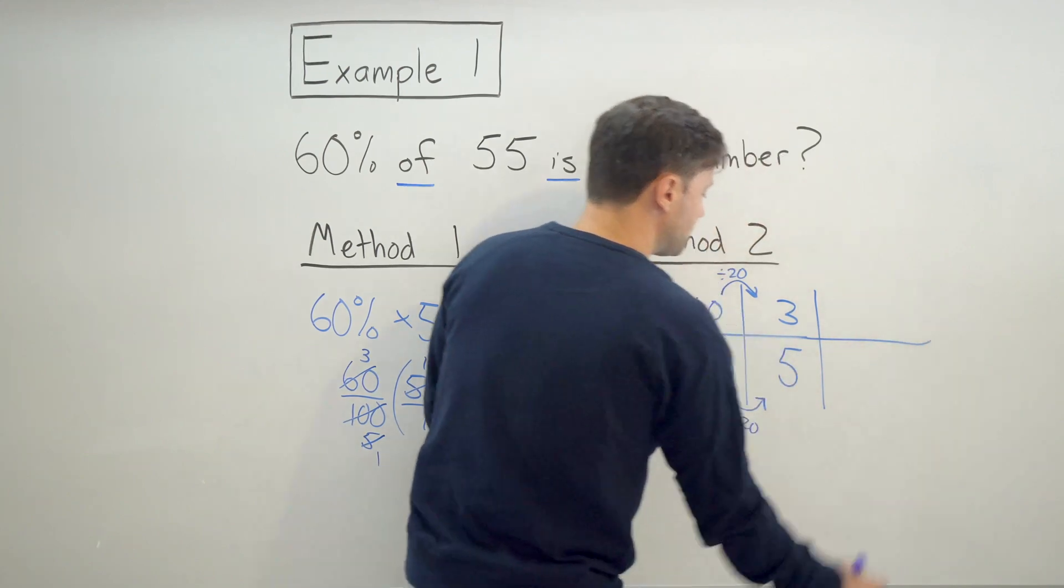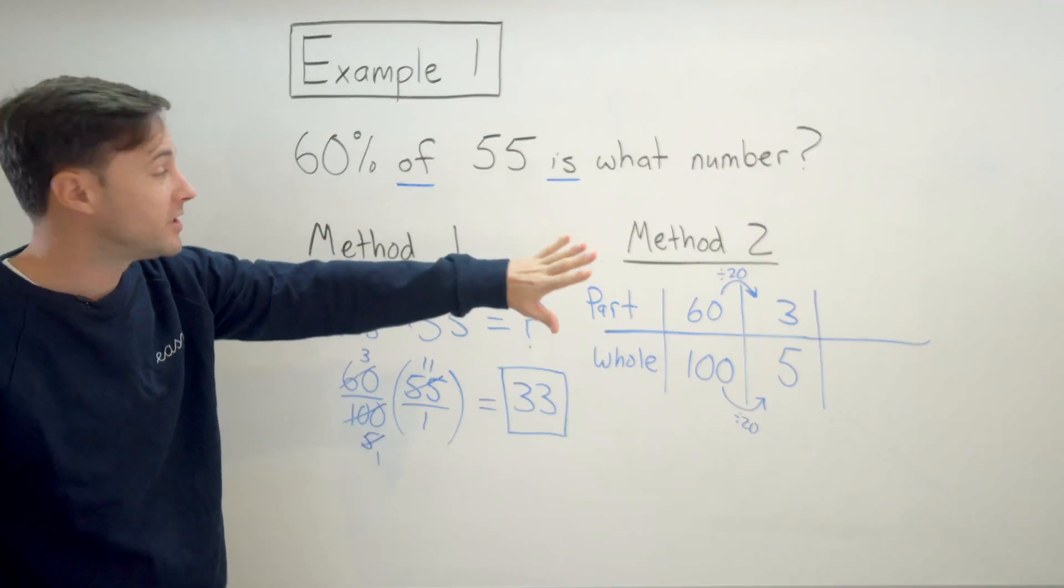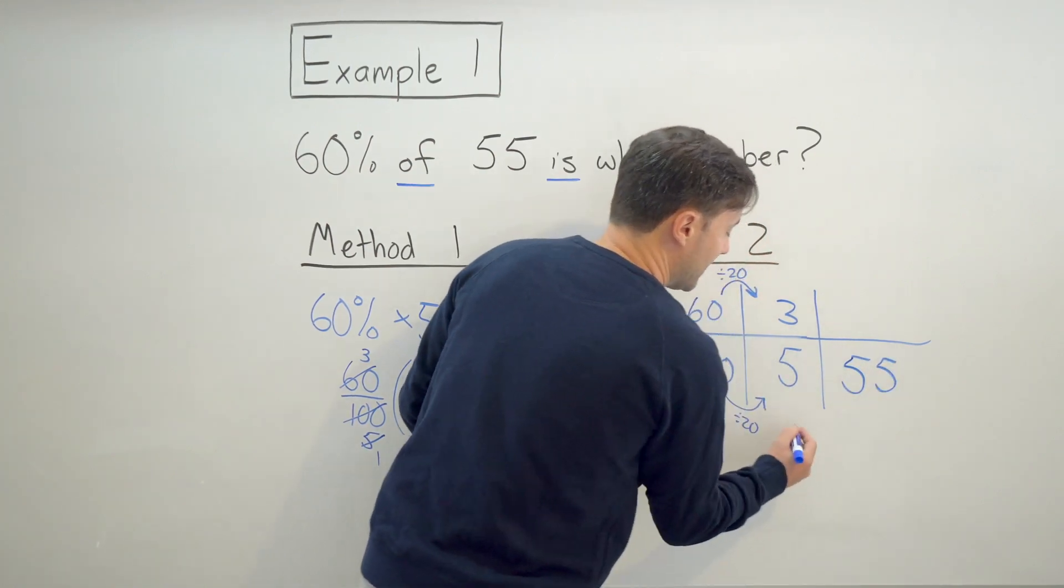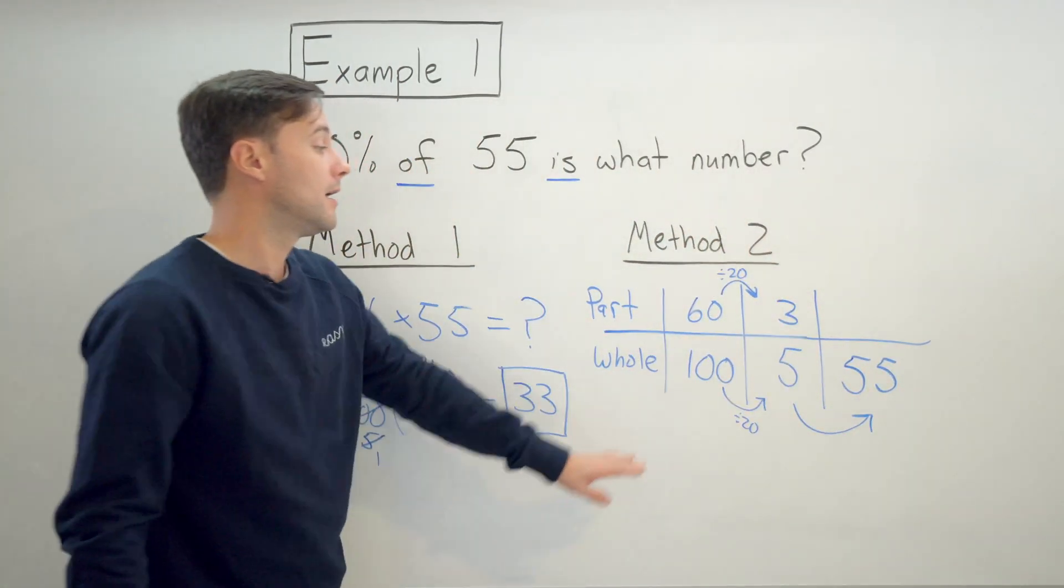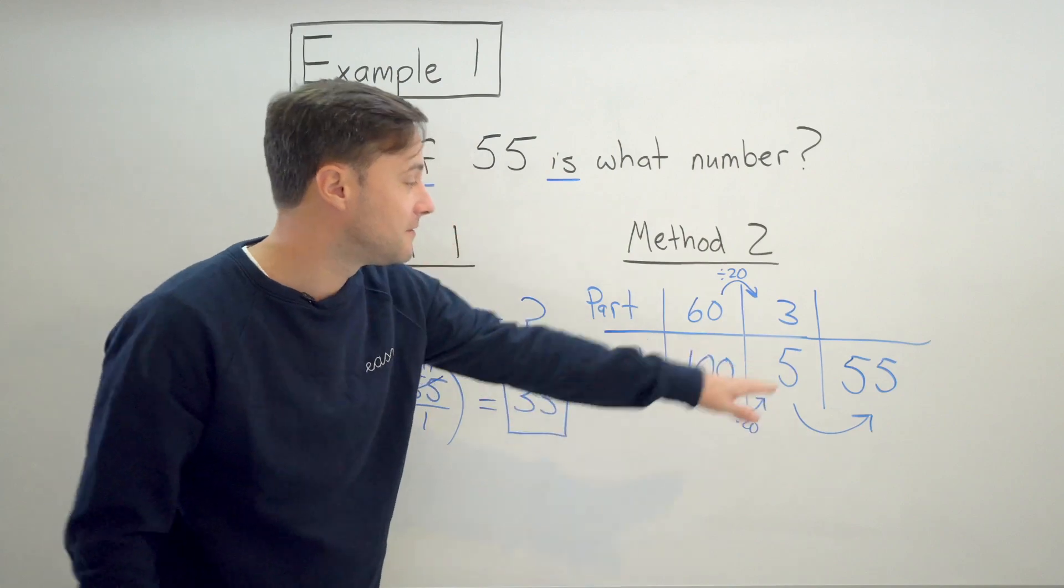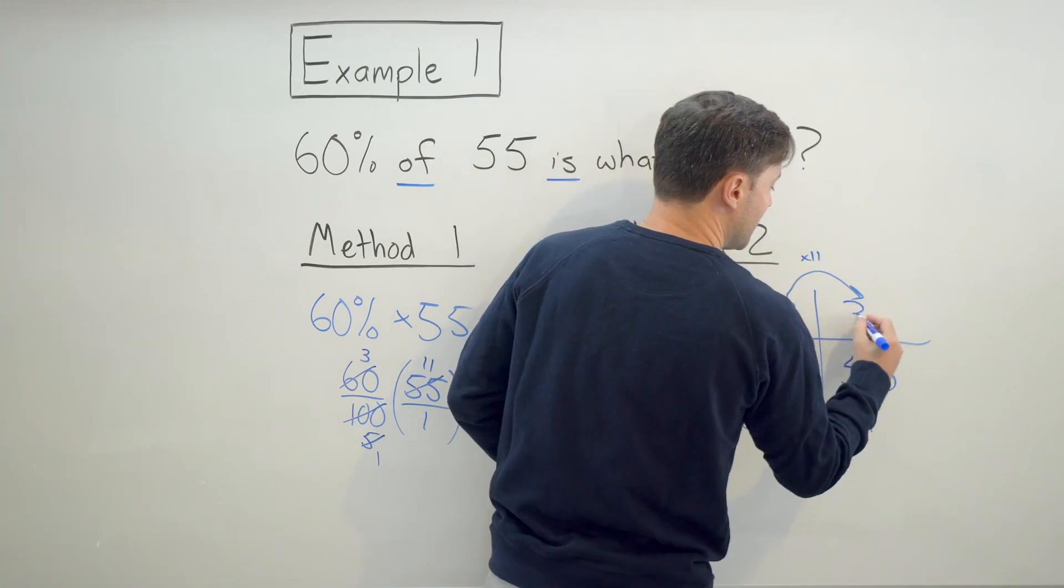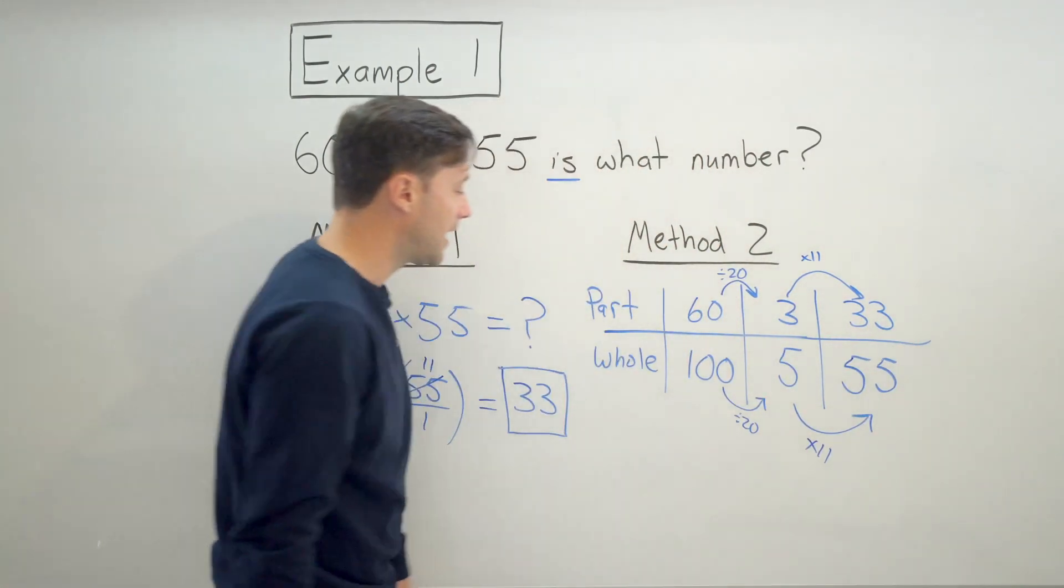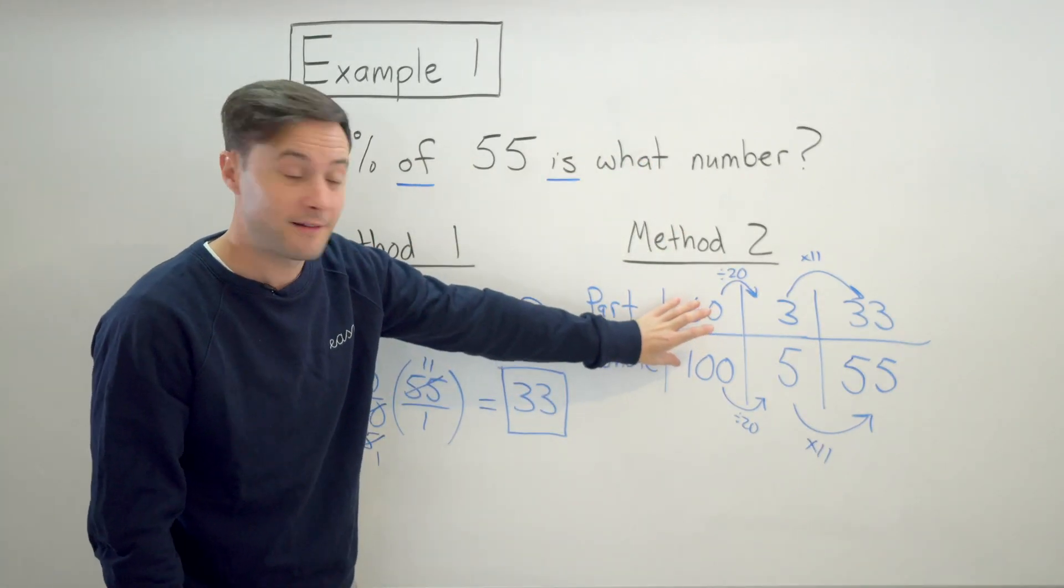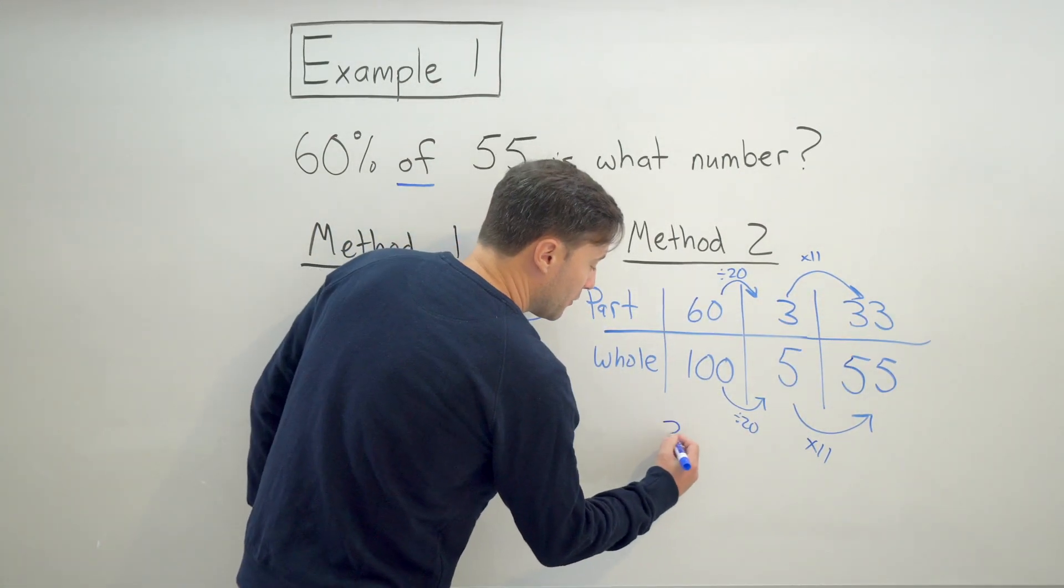And now look how much easier this is going to be. I know I want to find the equivalent ratio when 55 is the whole. I'm trying to get to here. And now because I made an equivalent ratio by simplifying first, it's much easier. So 5 to 55 is very simple. That's times 11. 3 times 11 is going to give me 33. So again, 60% of 55 is what number? Well, 60% is right here. The equivalent ratio when the whole is 55, that would be 33 as well.